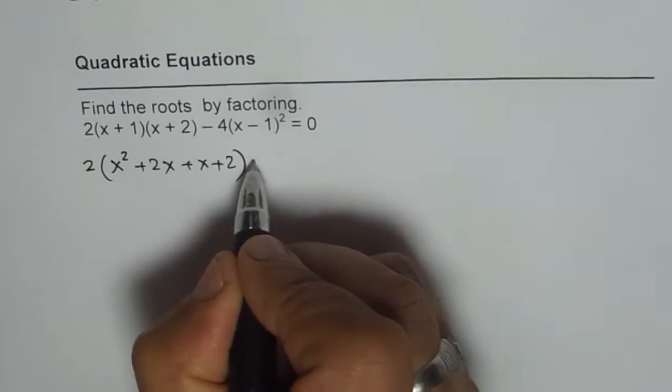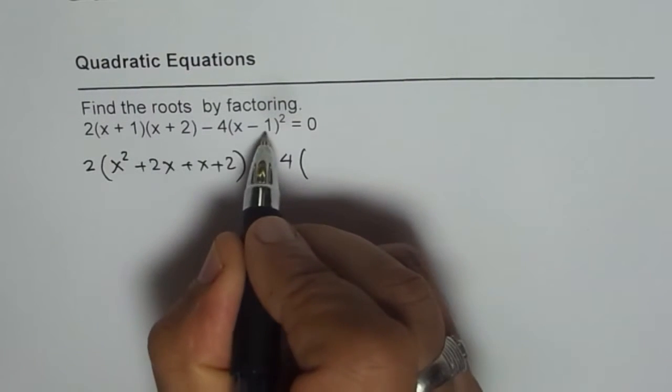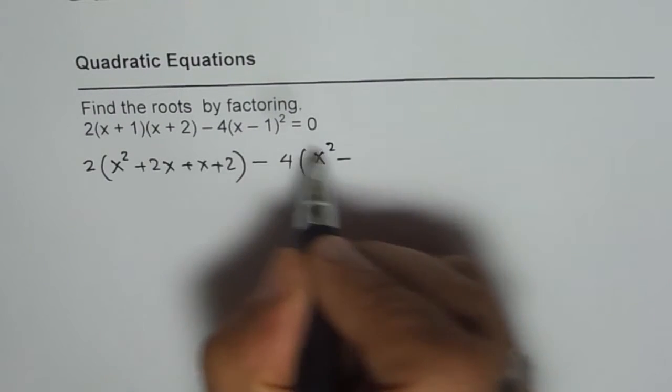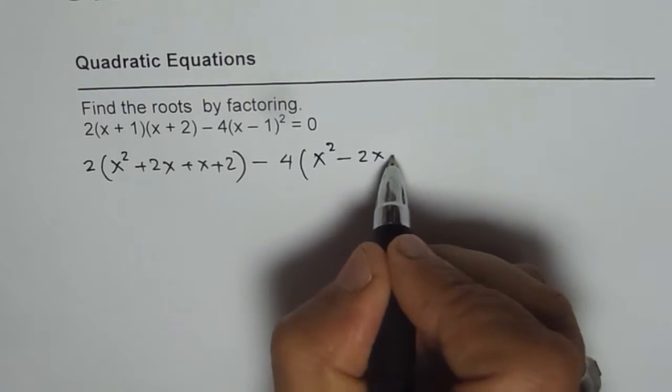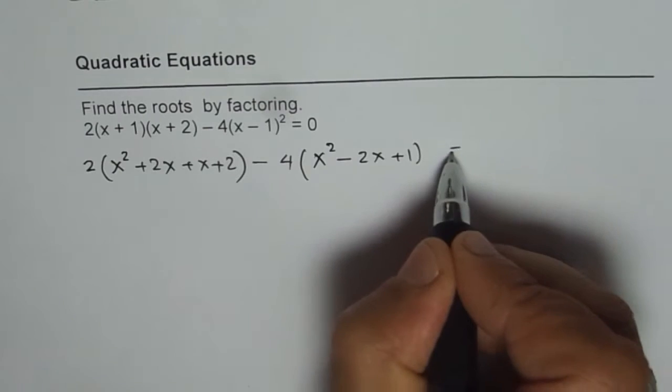The other term is -4(x - 1)² which gives you x² - 2x + 1, and all this should be equal to 0.